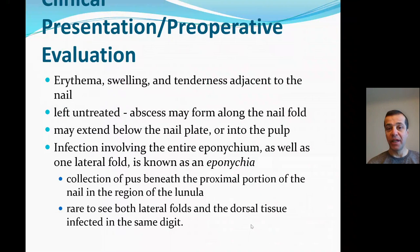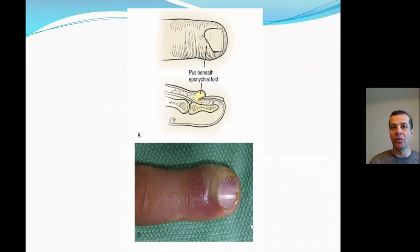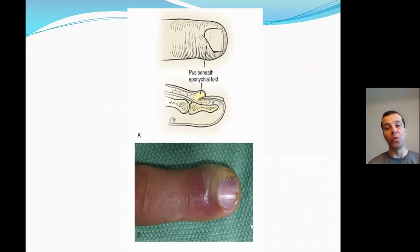Infection of the entire hyponychium as well as one lateral fold is the most common clinically encountered form, known as eponychia — a collection of pus beneath the proximal portion of the nail in the region of the lunula. It's rare to see both lateral folds involved; usually it's proximal on one side. Clinically you may see pus that can go beneath the eponychial fold, occasionally extending under the nail plate to form a horseshoe abscess, typically affecting only one side of the nail.